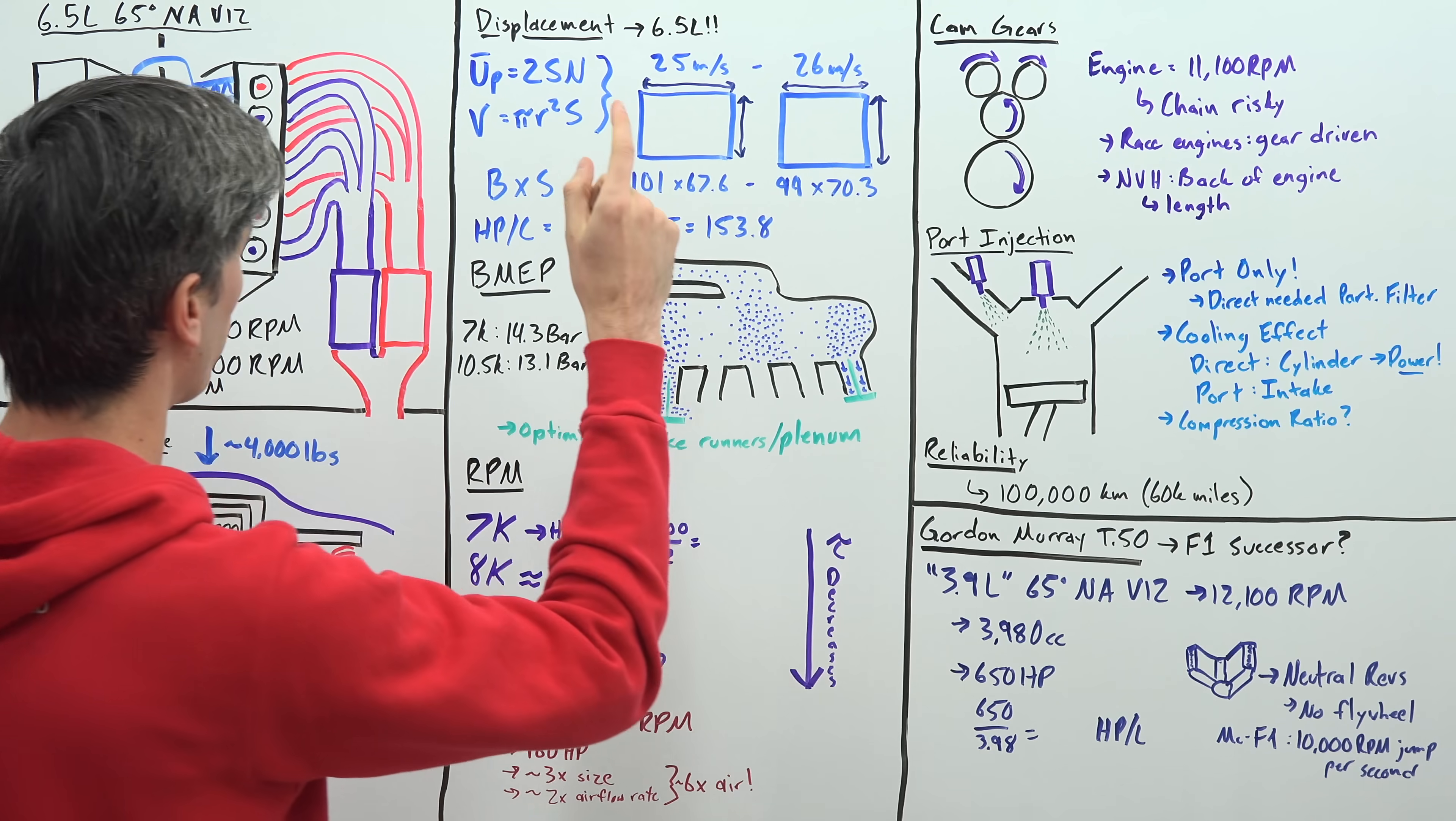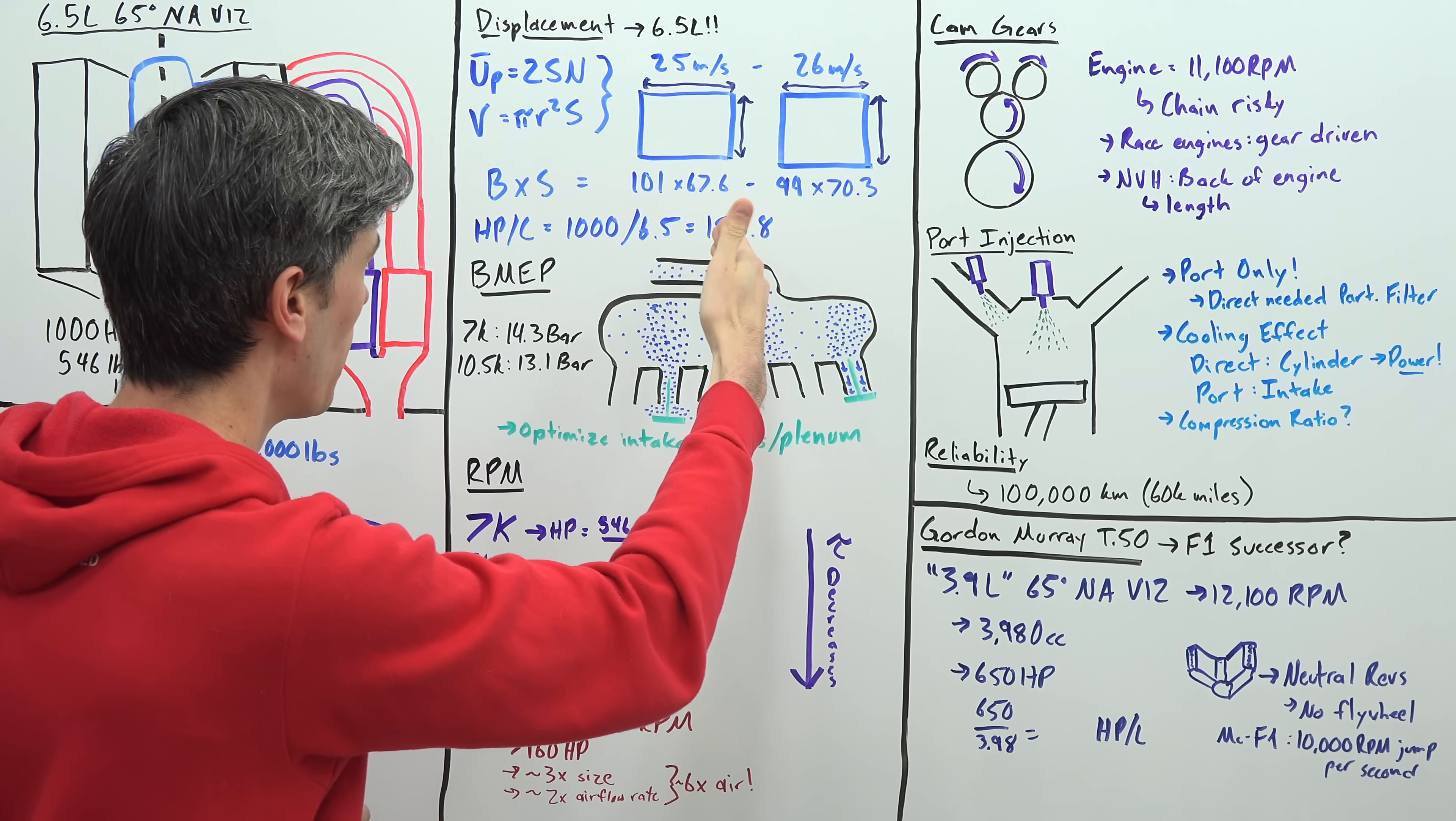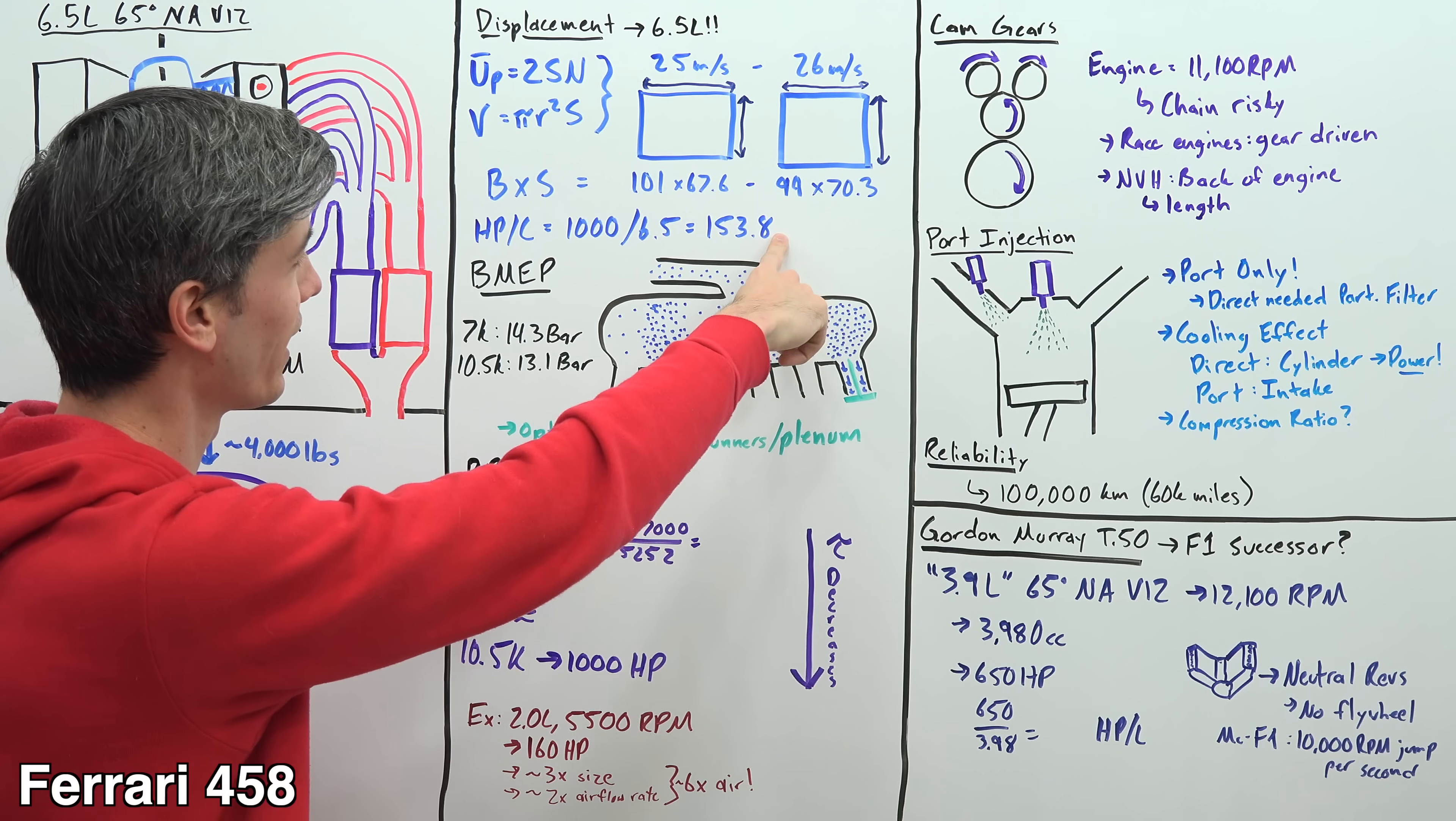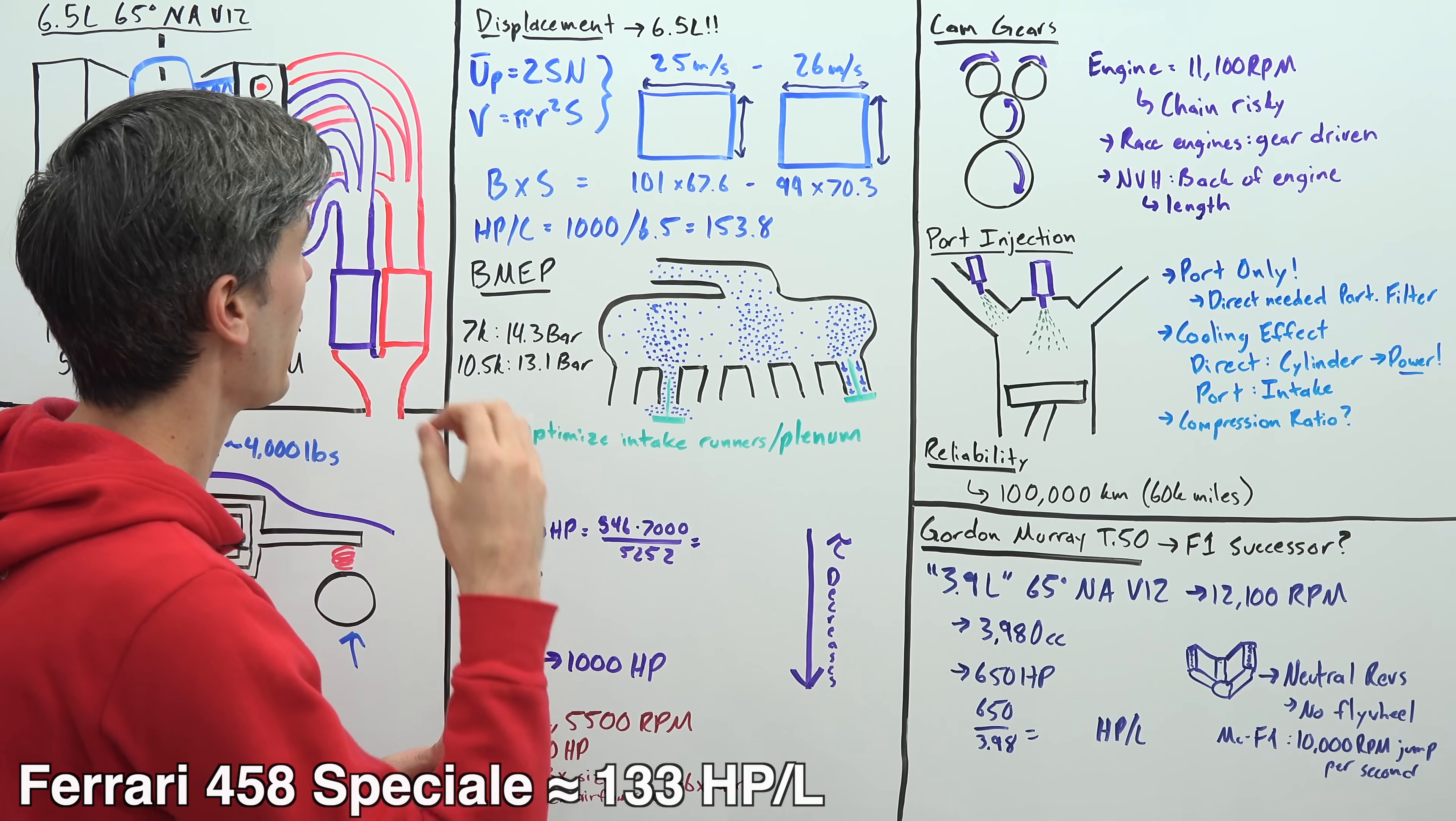So starting off with displacement, this is a 6.5 liter engine. A thousand horsepower means it's making 153.8 horsepower per liter which beats everything else naturally aspirated before it by a long shot.